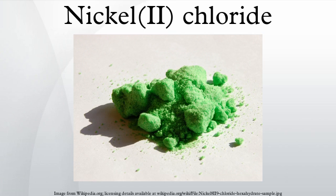In contrast, NiCl₂·6H₂O consists of separated trans molecules linked more weakly to adjacent water molecules. Only four of the six water molecules in the formula are bound to the nickel, and the remaining two are water of crystallization. Cobalt chloride hexahydrate has a similar structure. The hexahydrate occurs in nature as the very rare mineral nickel-bischofite. The dihydrate NiCl₂·2H₂O adopts a structure intermediate between the hexahydrate and the anhydrous forms. It consists of infinite chains of NiCl₂, wherein both chloride centers are bridging ligands.